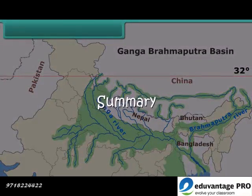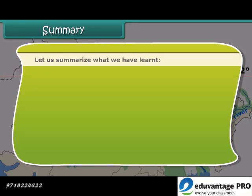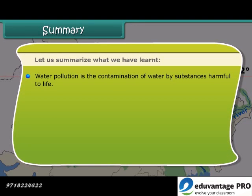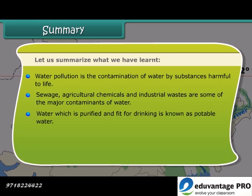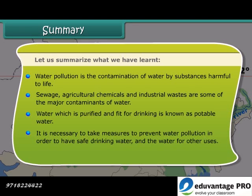Summary. Let us summarize what we have learned. Water pollution is the contamination of water by substances harmful to life. Agricultural chemicals and industrial wastes are some of the major contaminants of water. Water which is purified and fit for drinking is known as potable water. It is necessary to take measures to prevent water pollution in order to have safe drinking water and water for other uses.